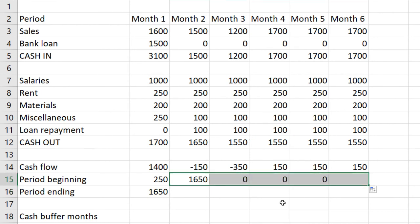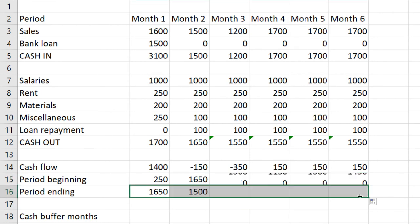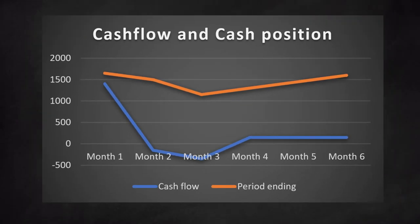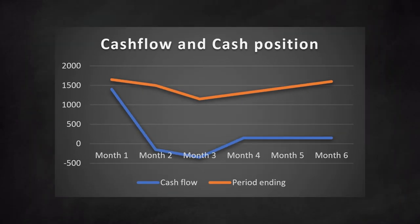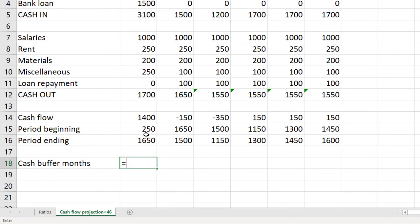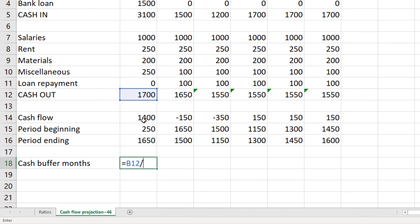Now we look at our cash flow projection. We notice that the monthly cash flow is negative for two months. But the cash buffer absorbs these fluctuations. The orange line shows that our liquidity projection is fine. The cash buffer months are the number of months the company can survive without any new cash inflows. The calculation is simple: the cash at the end of the month divided by the cash outflow.